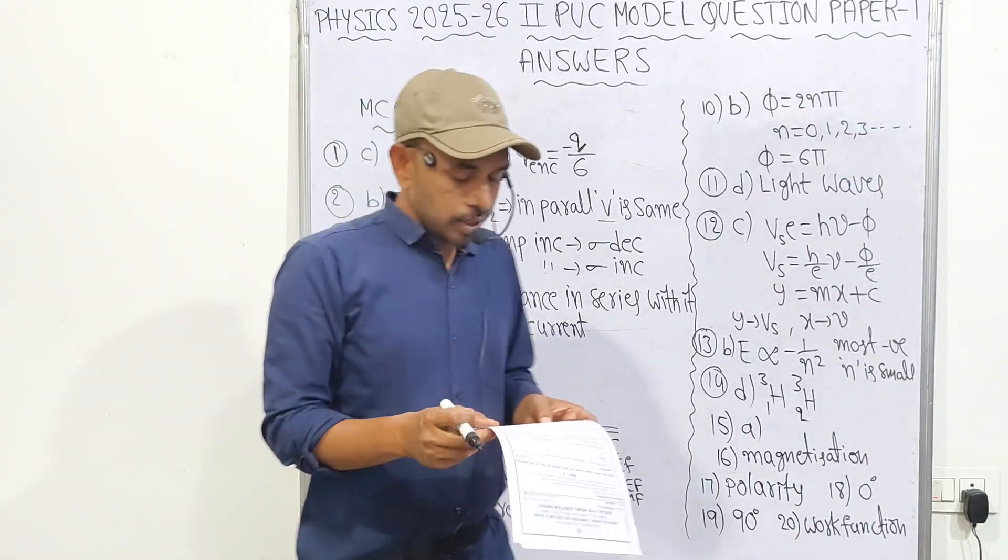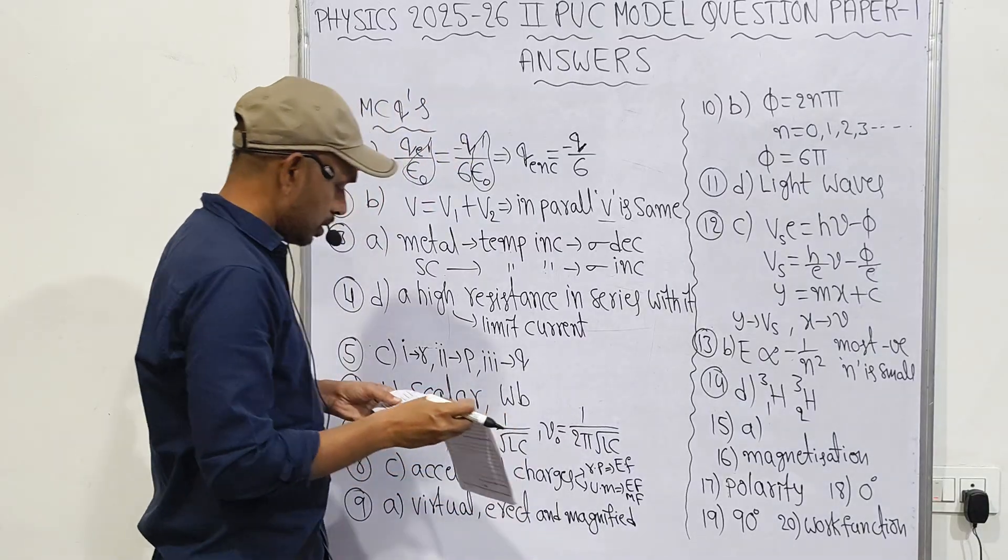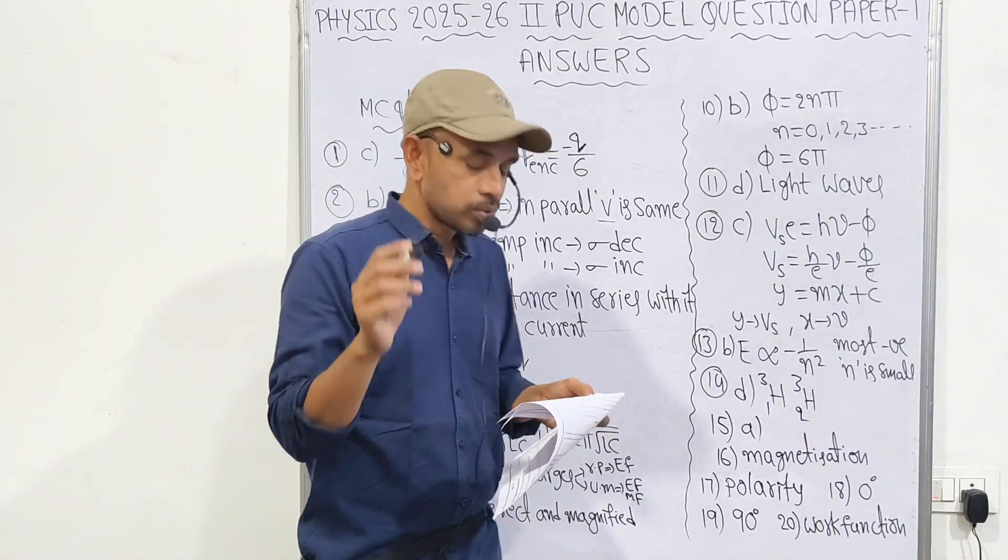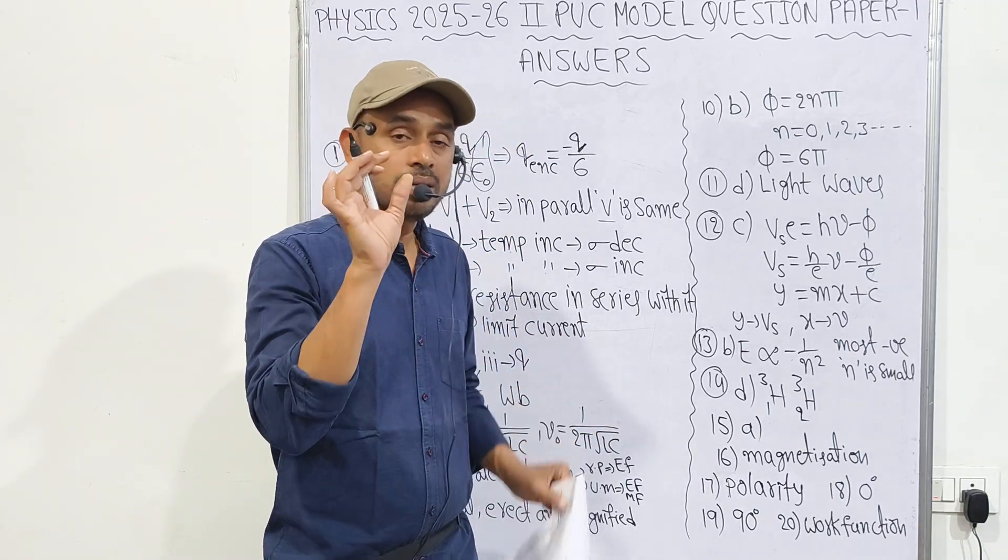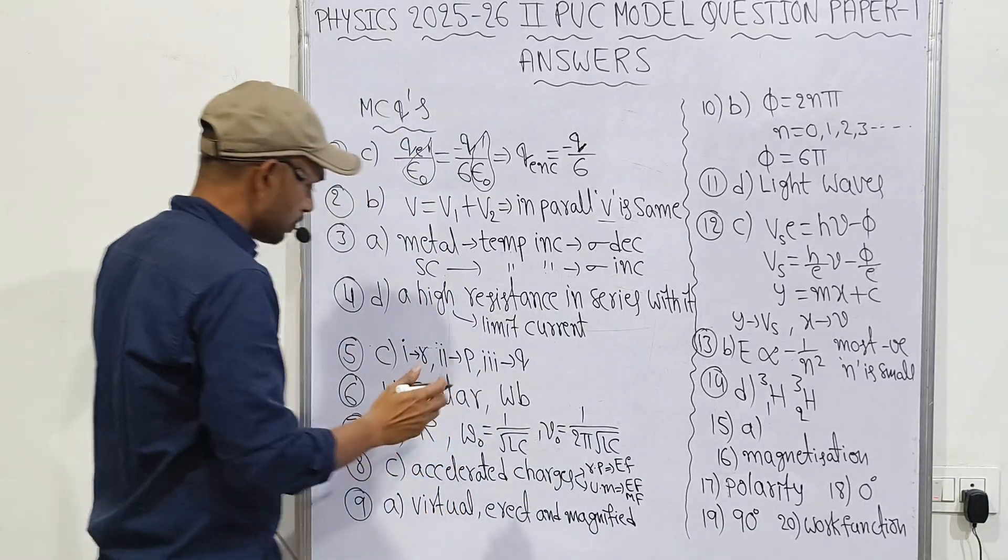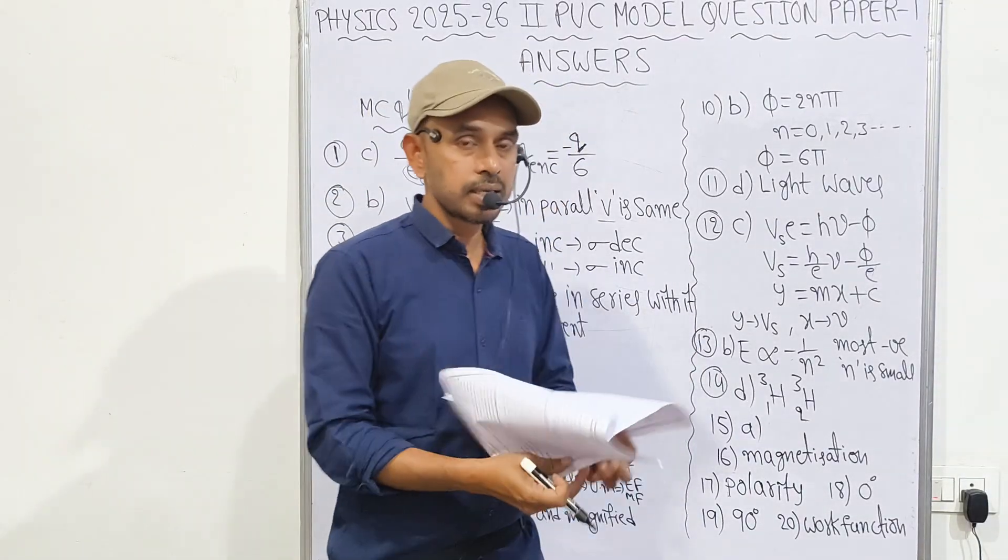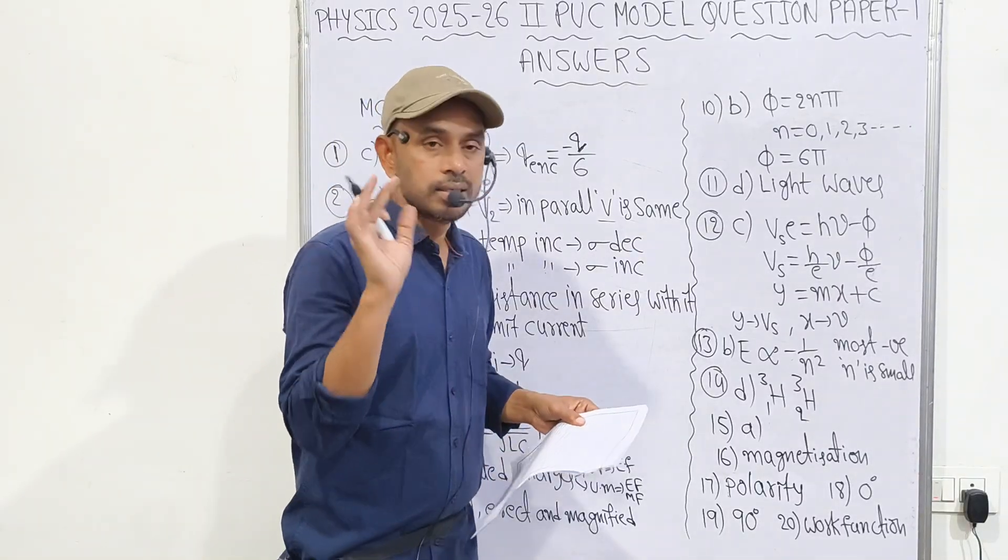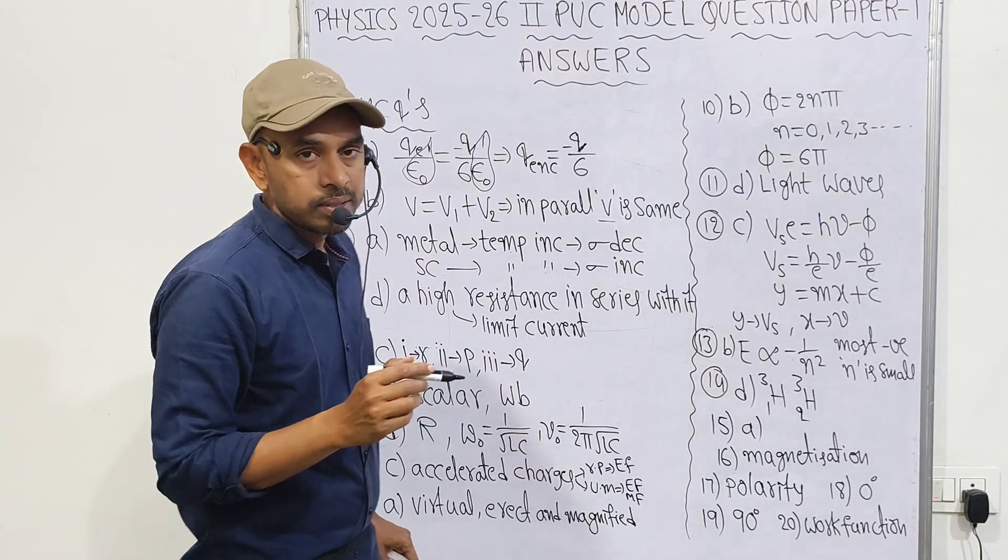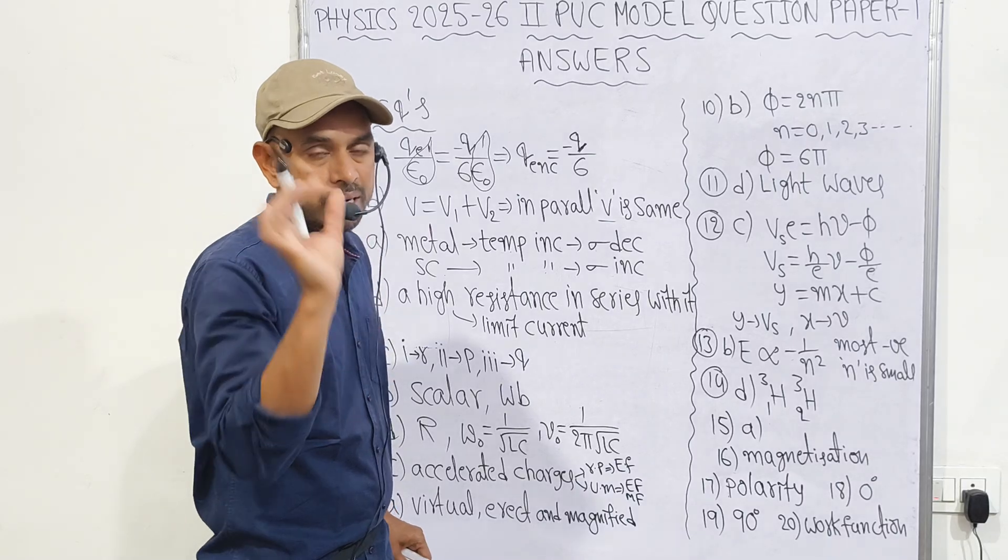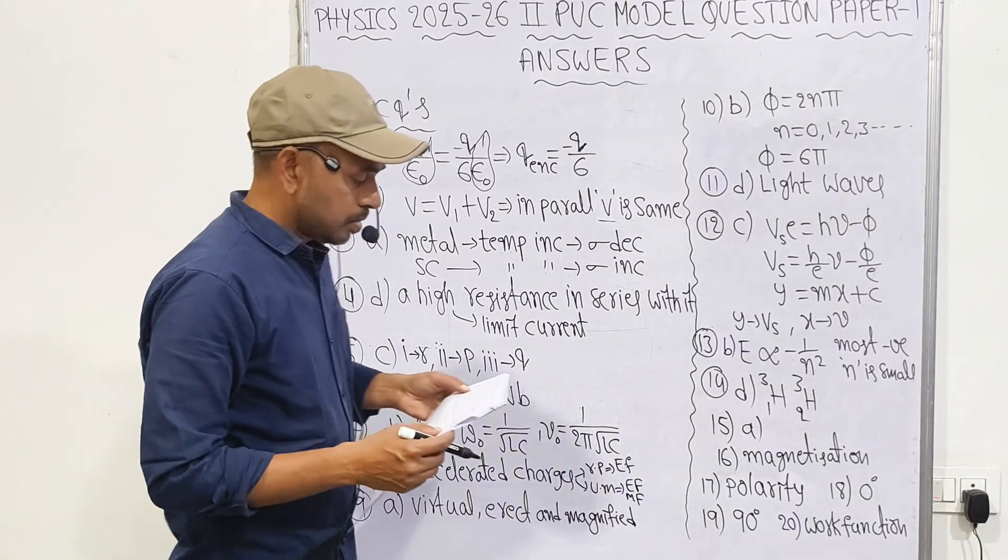Fifth one: they mentioned paramagnetism, diamagnetism, ferromagnetism. Which one is suitable we need to select. Paramagnetism is sodium example. Diamagnetism has magnetic properties common to all substances. Ferromagnetism means domain properties. Option C is correct. Sixth one: magnetic flux is a scalar quantity because phi equals B bar dot A bar, two vectors dot product gives scalar, and SI unit is Weber. Sixth question answer is B.